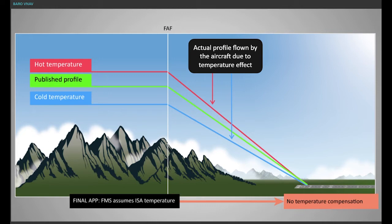This is because the FMS does not correct the vertical path angle, VPA, for temperature variations. Note, the VPA is not temperature compensated and based on ISA.